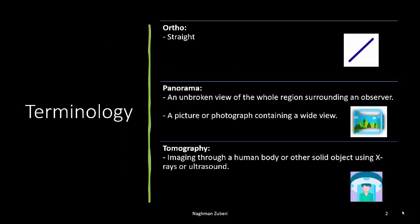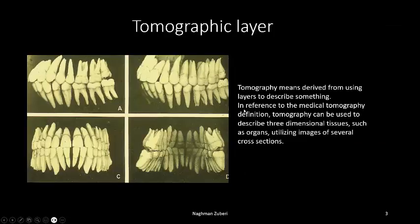Let's look at the name orthopantomogram. 'Ortho' means straight — we get an x-ray where the three-dimensional object, the face of the person, is shown on a flat film. 'Panoramic' means an unbroken view of the whole surrounding region, just like a panoramic view from your camera. 'Tomography' means imaging through the human body using x-rays or ultrasound, and it describes using layers — in medical tomography, cross-sections of three-dimensional tissues such as organs are used for diagnostic purposes.